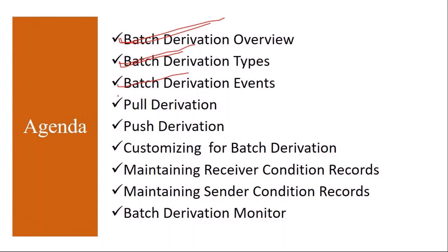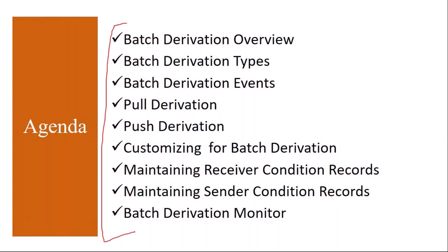We will see batch derivation events — what are the different events when batch derivation is carried out. Then different batch derivations: pull derivation and push derivation, what is the difference between these two. Then customizing for batch derivation — what are the background settings we need to do, and then maintaining the receiver condition records and sender condition records — what is the master data we need to maintain. And then followed by the batch derivation model. These are the topics we will be covering in batch derivation.